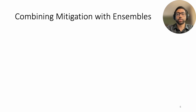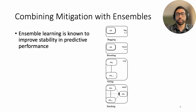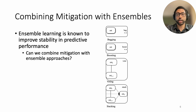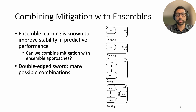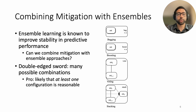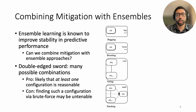Fortunately, ensemble learning is known to improve stability in predictive performance, and in our work we ask whether we can combine mitigation with ensemble learning to improve fairness stability. However, the many potential ways to combine the two serve as a double-edged sword. On one hand, it is likely that at least one configuration may yield suitable fairness in predictive performance, but on the other, finding such a configuration via brute-force search may be untenable with limited resources.